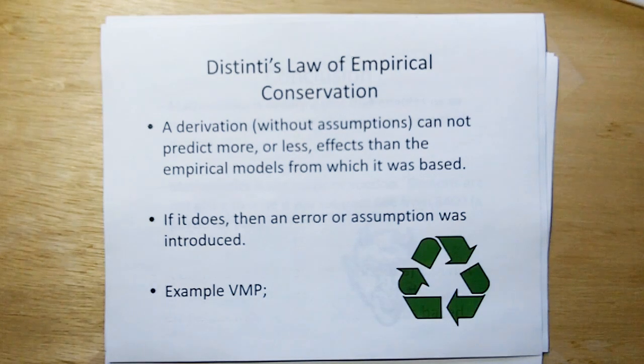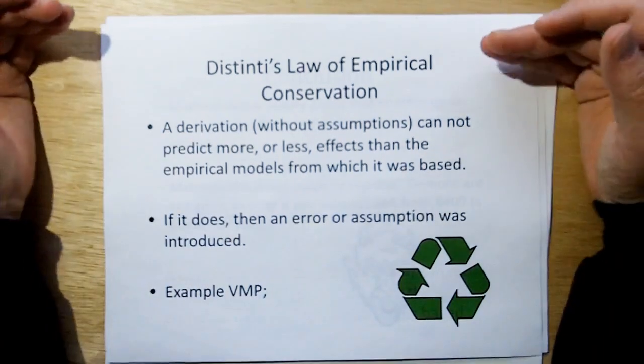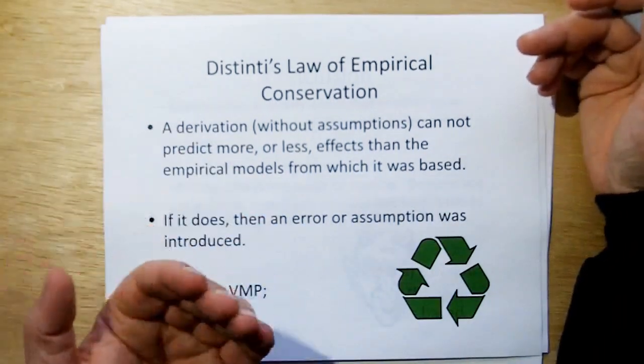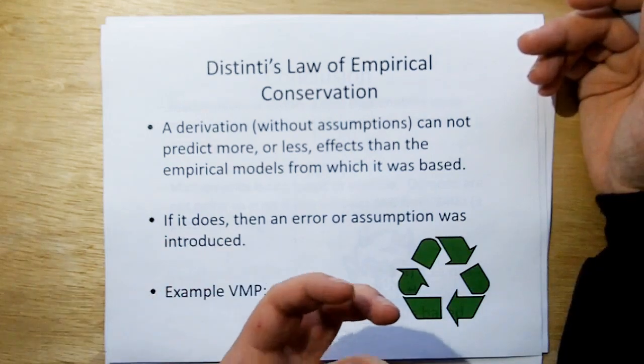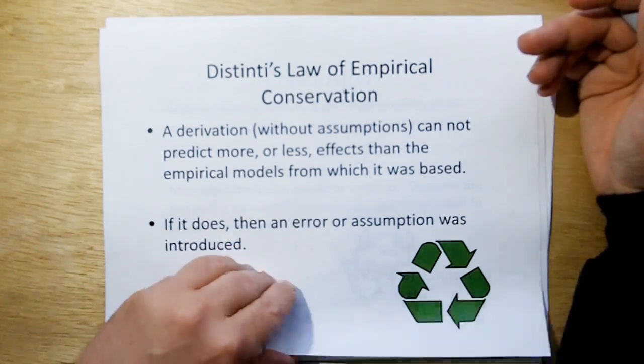So we've got to not, if we're getting more out of something than we put in, that's like over-unity with mathematical models. We have to be careful. If we're getting more out than we put in, we've done something wrong somewhere.